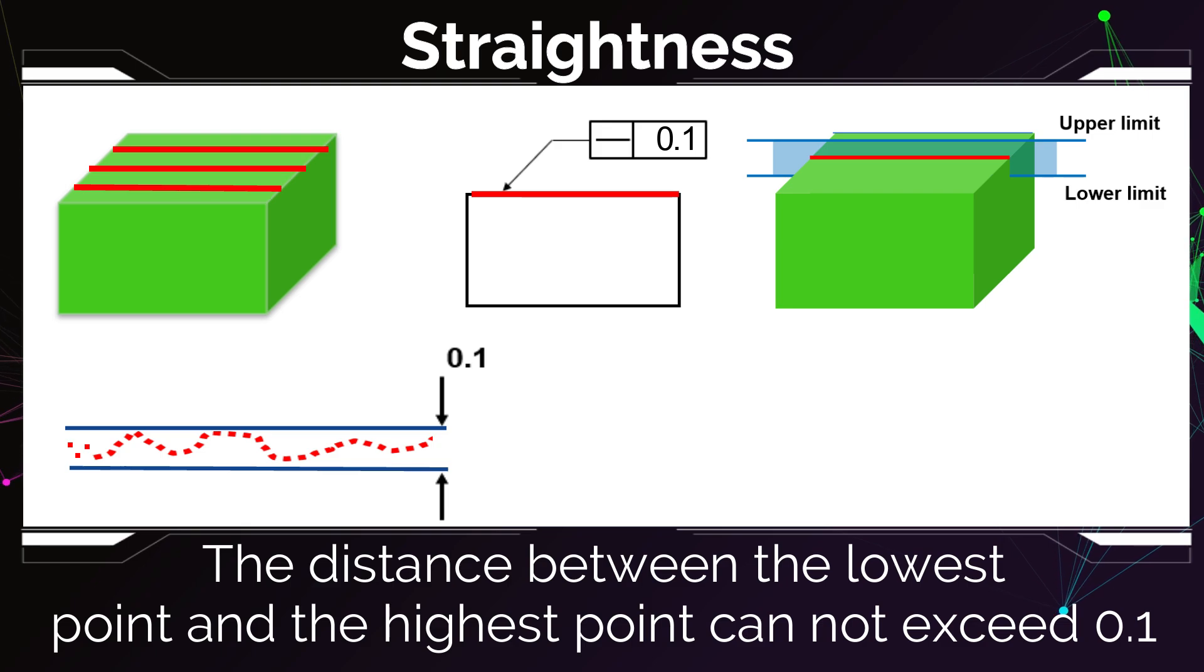So you just start with the lowest point and draw the other line at a distance of 0.1, or whatever the value of the tolerance zone is. And any other point on the line has to fall between them.